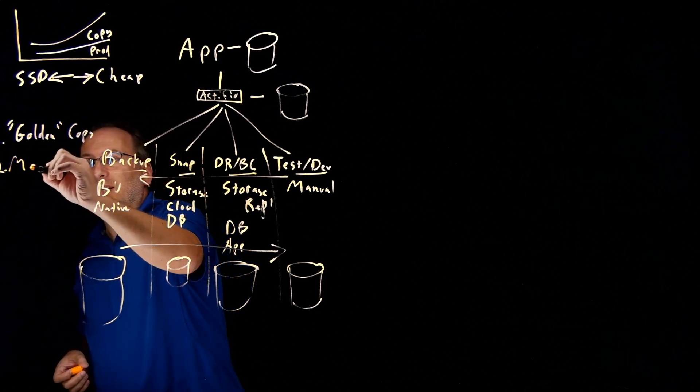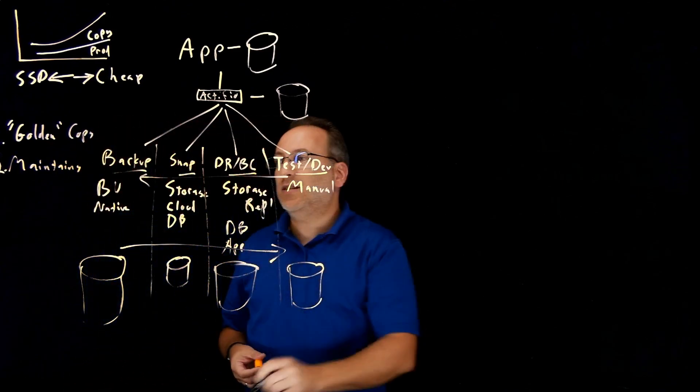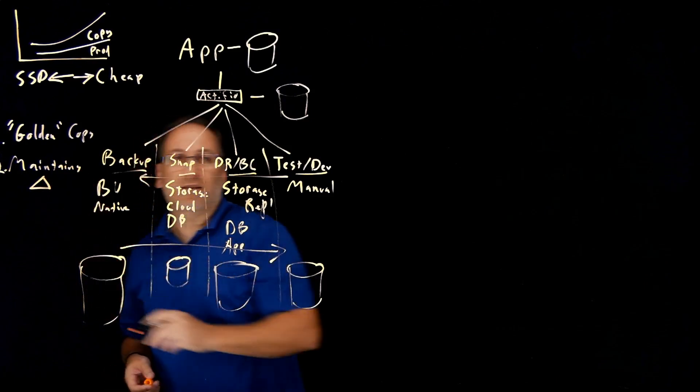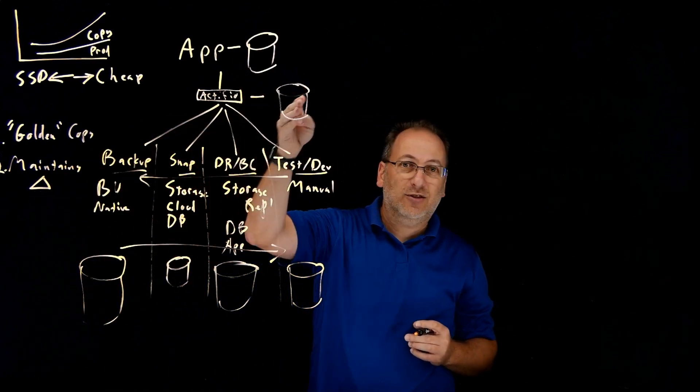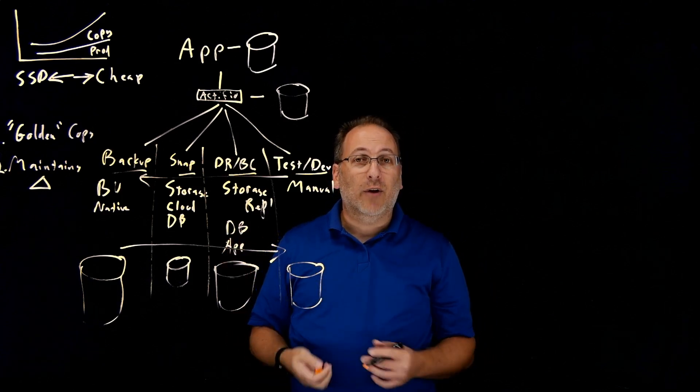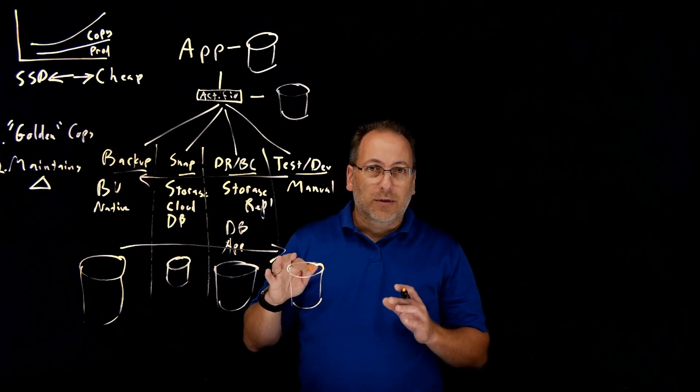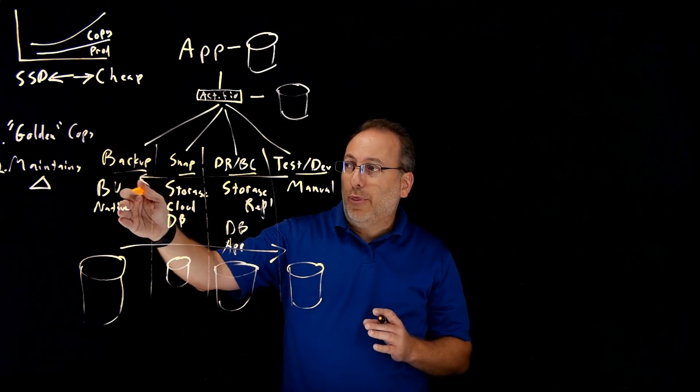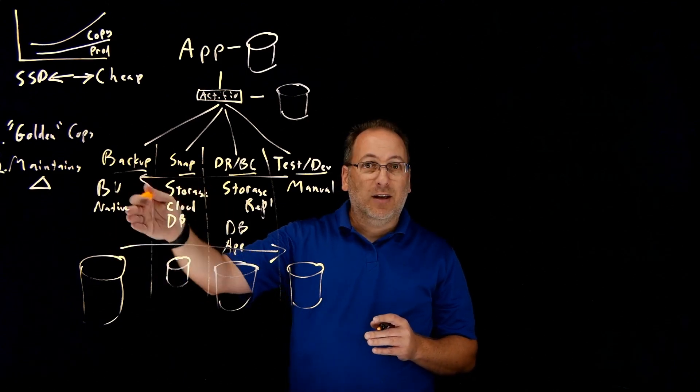Second thing it does is it maintains it. And the way that it maintains it is with deltas. It's an incremental forever refresh from that source into the Actifio copy. That allows us tremendous scale, right? It gives us these two things together, give us characteristics of both the backup and the snapshot drivers behind making copies.